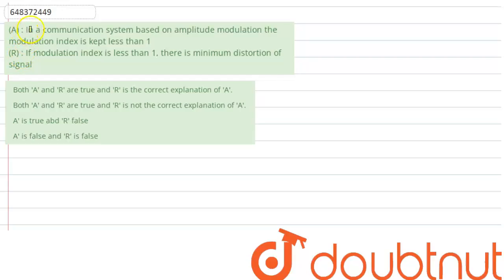Hello everyone, we have a question here. The question says, in a communication system based on amplitude modulation, the modulation index is kept less than 1.